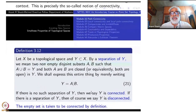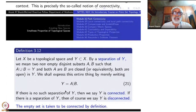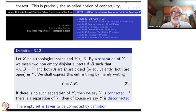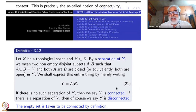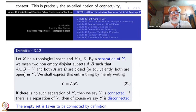The negation of this is very important — even if one of these conditions is not satisfied, it's a negation. If there is no such separation of Y, then we say Y is connected. So connectivity, which is a very nice concept, is defined in a negative way here. The separation gives you that Y is disconnected. If there is a separation, it is called disconnected.